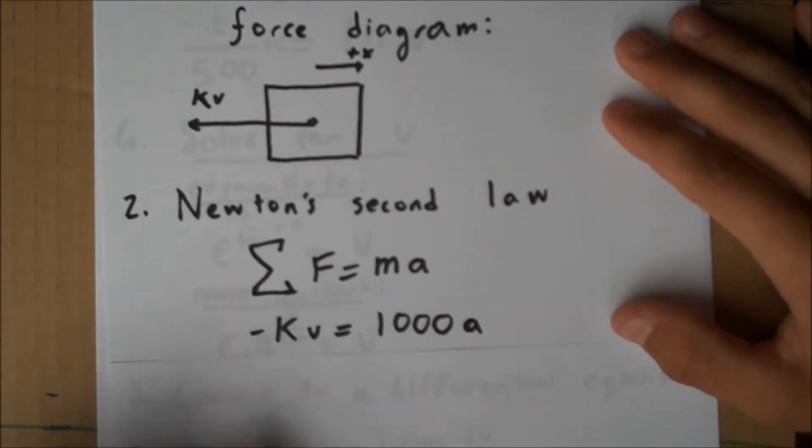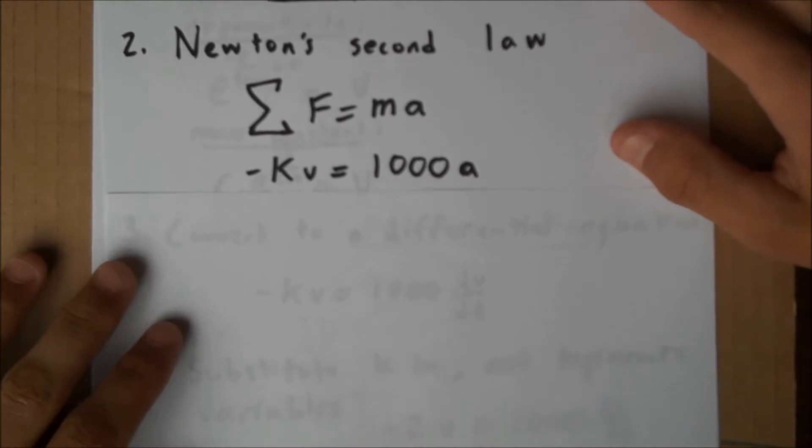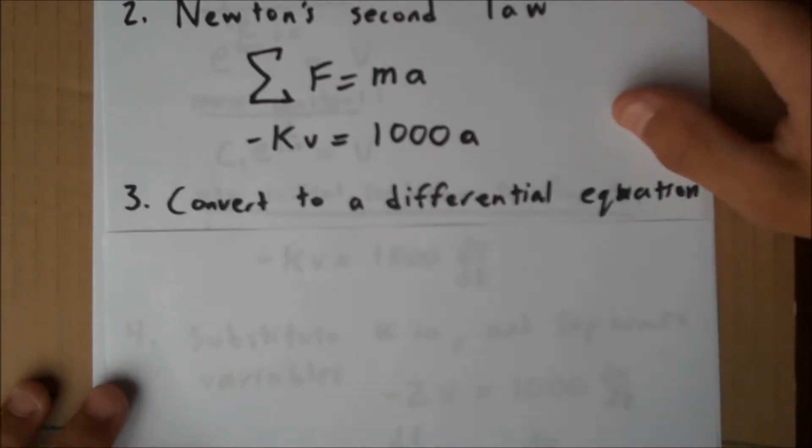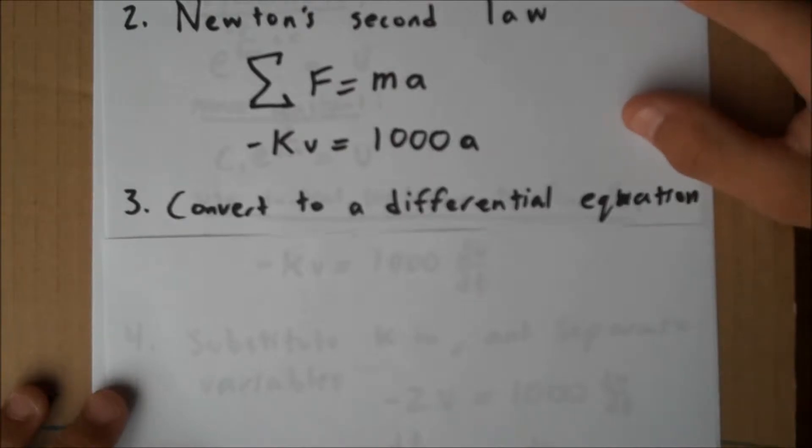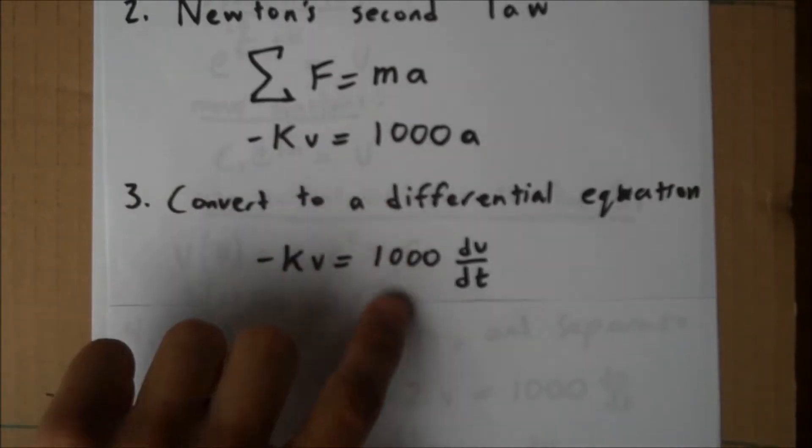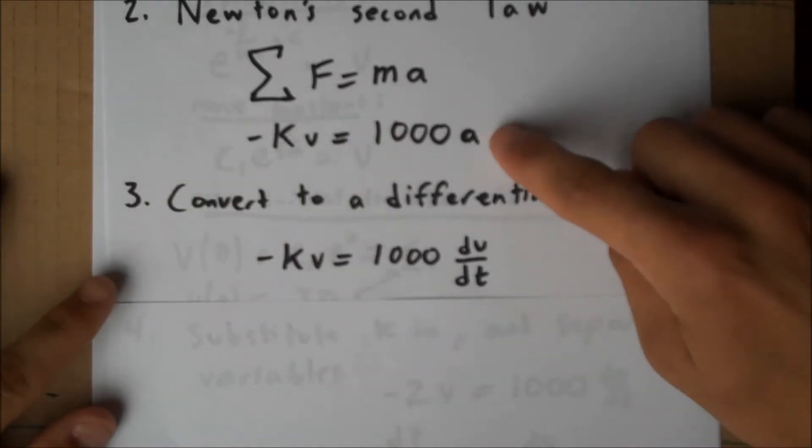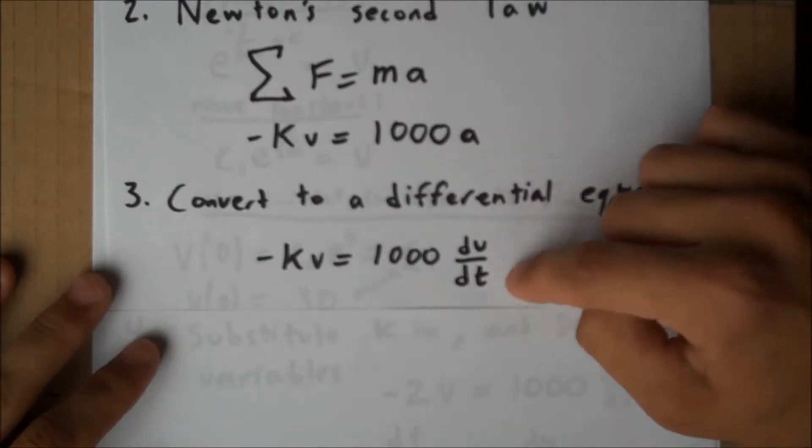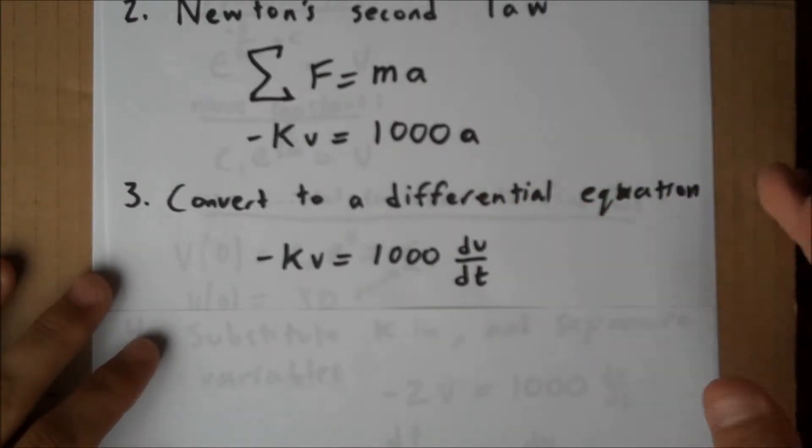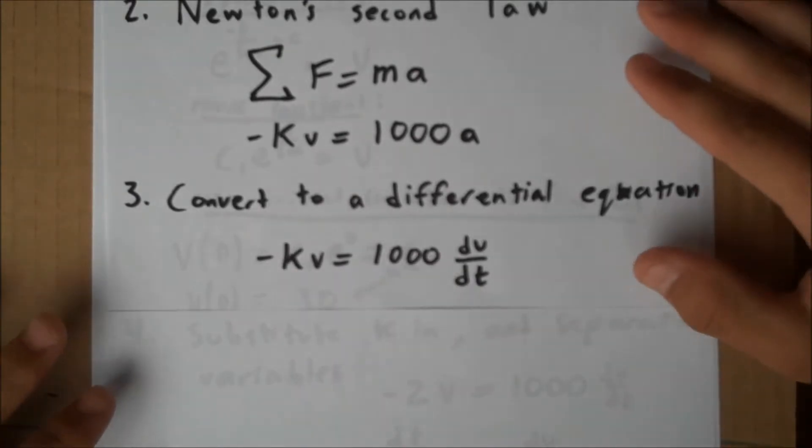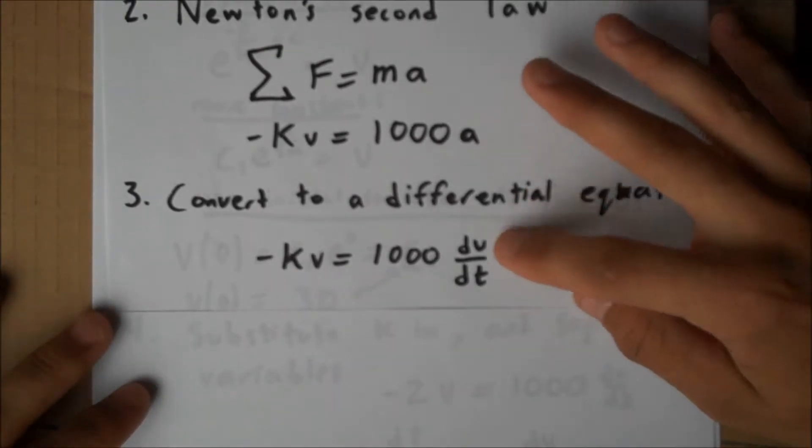Now that we have Newton's second law written, and we want to look at how things change over time, we convert to a differential equation. Negative kv, as above, equals 1,000. Now, a will be replaced with dv/dt, the time derivative of velocity, which we know acceleration to be. Now, we have a differential equation relating velocity with its time derivative, and we can solve for the time dependence of v.